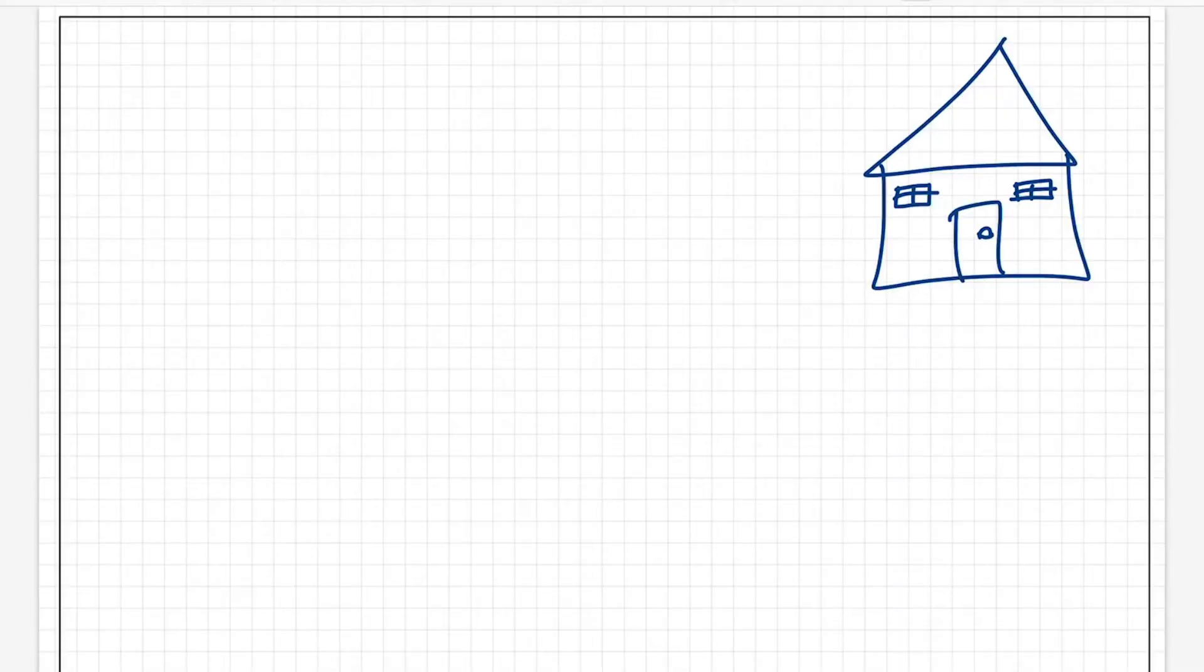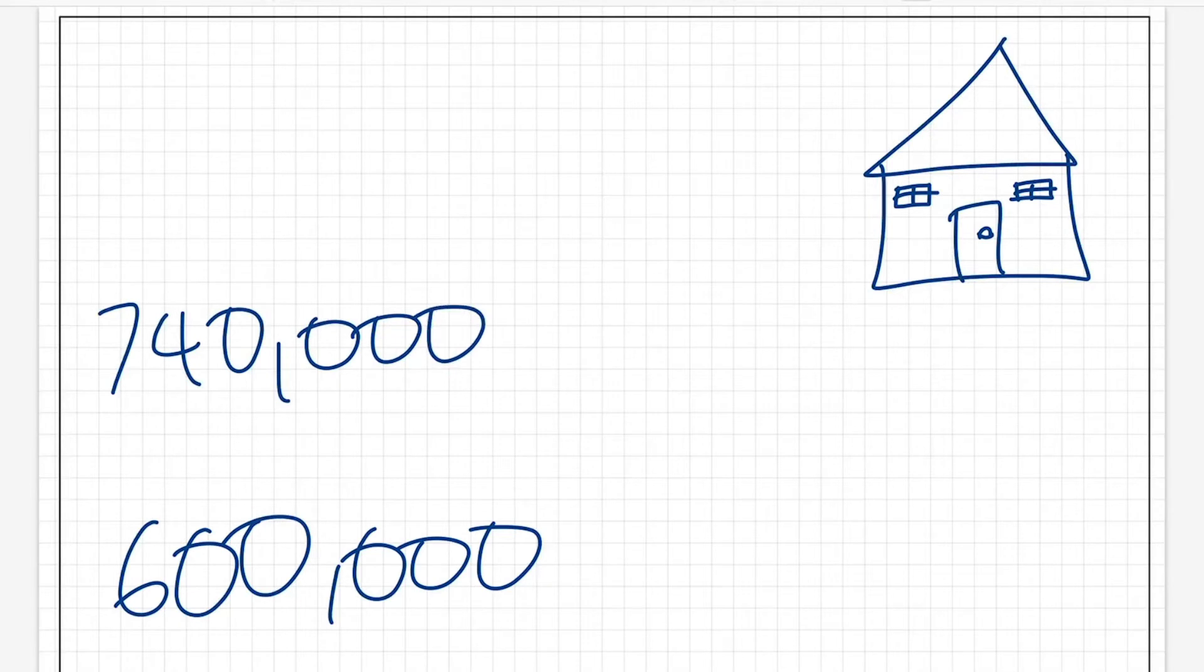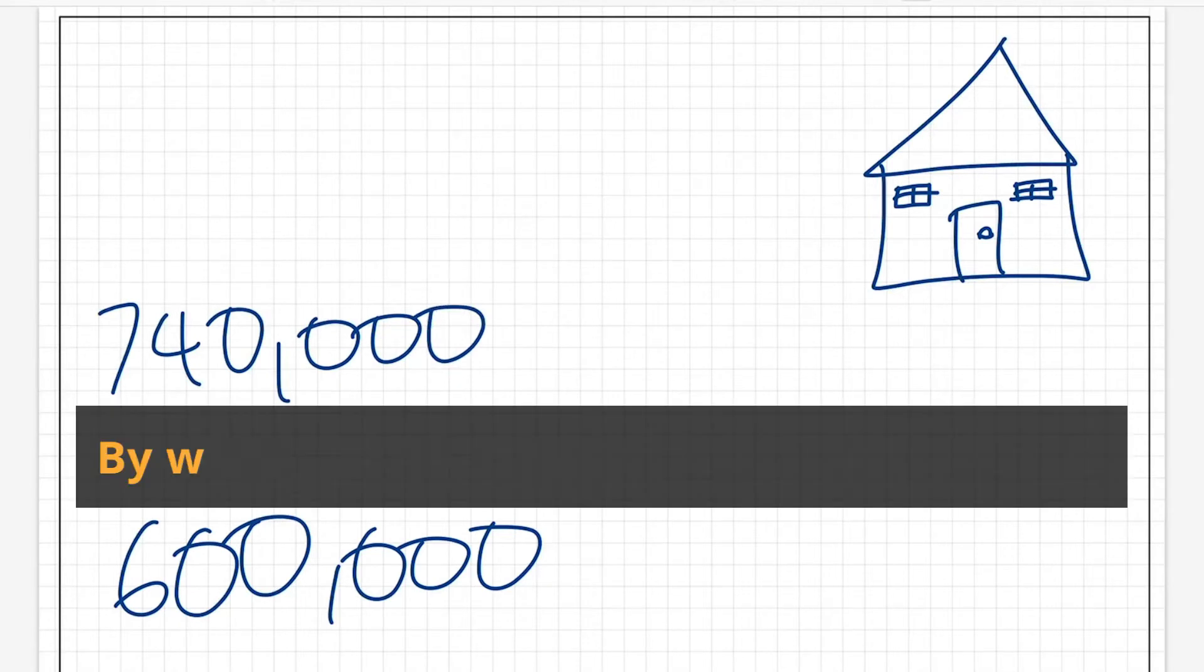Right, let me grab the iPad. Let's get into an example, and we'll go through the four steps together. Okay, so here's our example. Peter, our property investor, has purchased a home for $600,000. After a period of time, the value of the home has increased to $740,000. By what percentage has the value changed?